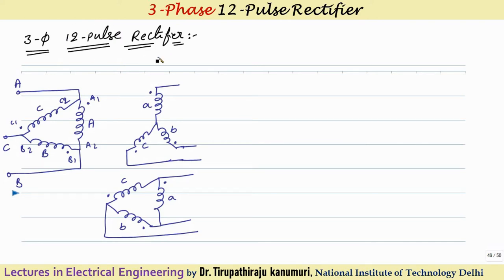In order to construct this, we use a three-winding transformer where the primary side connection is delta. The primary winding is connected in delta and there are two secondary windings: one secondary winding is connected in star and the third winding is connected in delta connection.